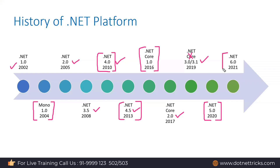.NET 6 preview has already been released, and the RTM will be available in November of this year. Going forward, every year they plan to release a new version of .NET — .NET 7, .NET 8, .NET 9 — each with new features, performance improvements, and various enhancements. This is a brief history of the .NET platform.